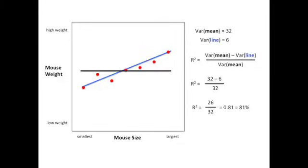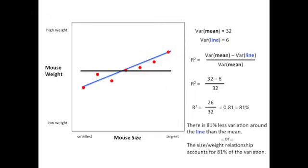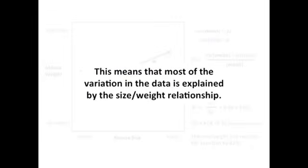Doing the division, 26 divided by 32 gives us 0.81, or 81%. This means that there is 81% less variation around the line than the mean. In other words, the size-weight relationship accounts for 81% of the total variation. This means that most of the variation in the data is explained by the size-weight relationship.